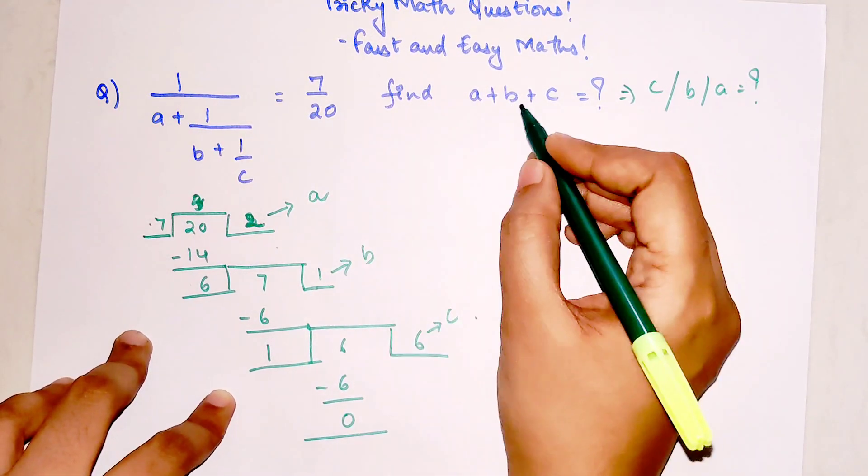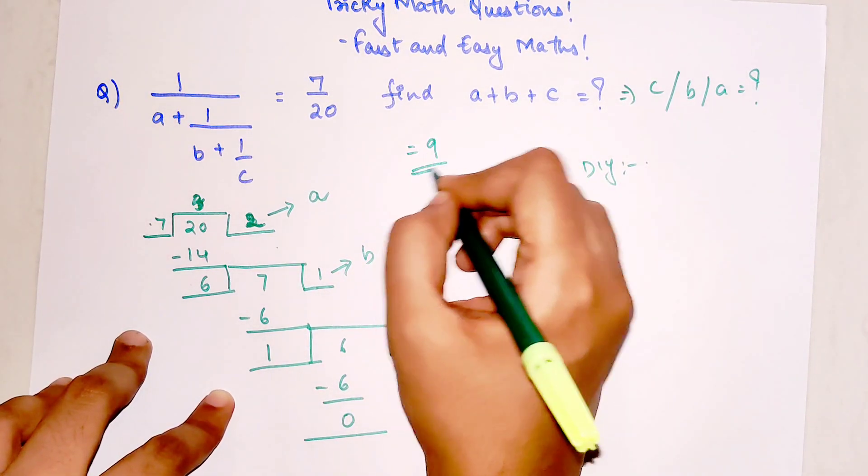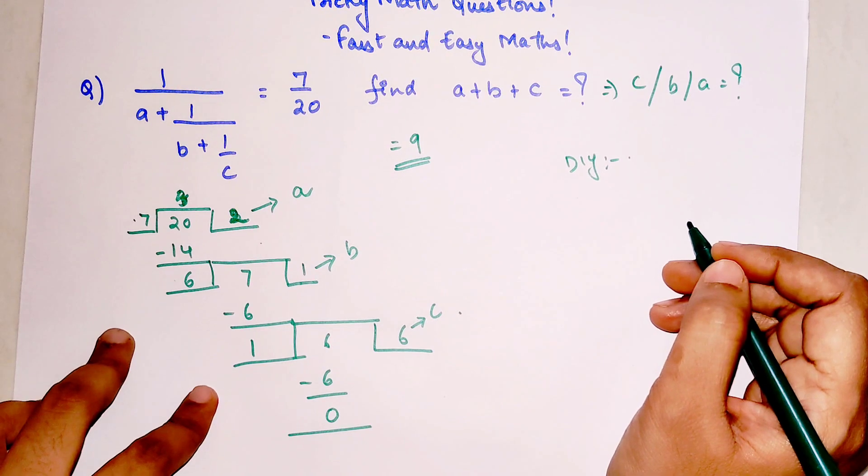So your final answer will be what? A plus B plus C is nothing but 2 plus 1, 3, 3 plus 6, which is going to get you 9. Answer is 9.